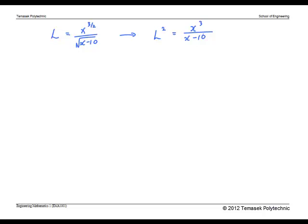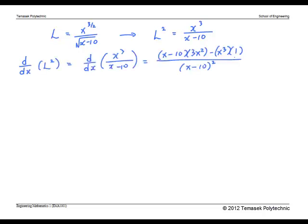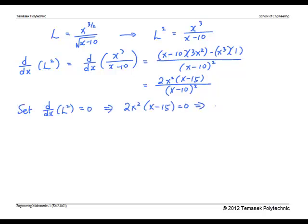First, we find the critical point. Differentiate L squared, this gives, by the quotient rule. The critical point is found when the first derivative is set to 0. We have x is 0, which is rejected, since x must be positive, or 15.